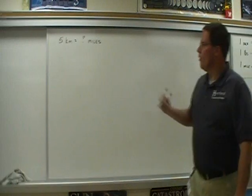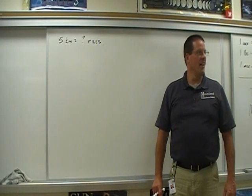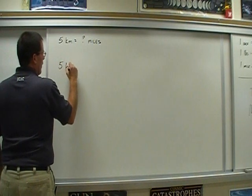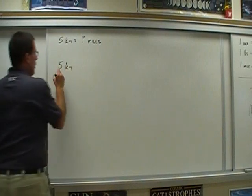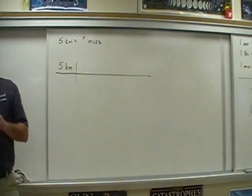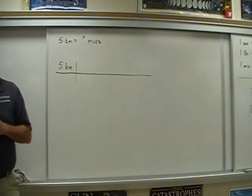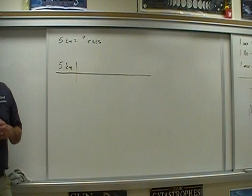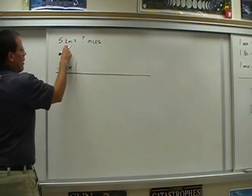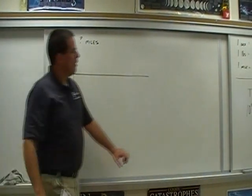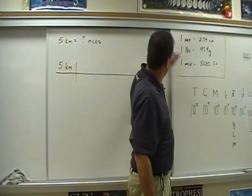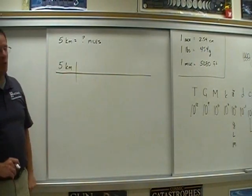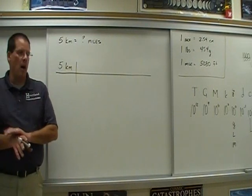Looking at this problem, how do we start? With what you know. So we know that we have five kilometers — we don't know how many miles. Write down what you know, and that's going to be a serious issue for the rest of the year. When you look at a problem, you have to know what's given. In some of these questions you're going to have to read into it a little more and go, what did he give us? What are we looking for? Do I have a conversion from kilometers to miles? I have inches to centimeters and miles to feet — looks like I'm going to use two conversions. I can't just go from kilometers to miles.